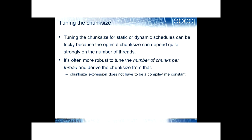Another consideration when using OpenMP loops is if we have loops with load imbalance, then we want to specify the chunk size. This can be true for either static or dynamic schedules. We want to try and choose the optimal chunk size, but that can get quite tricky because the best chunk size can depend strongly on how many threads you're using, and usually you're not going to specify the number of threads.